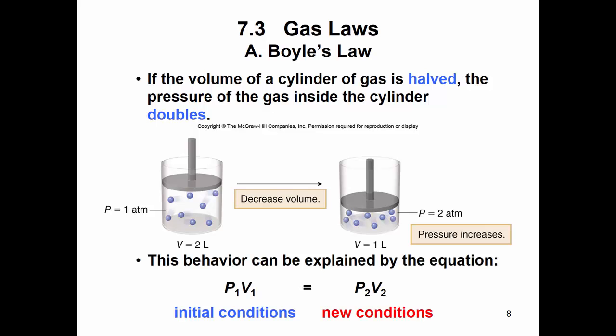And so we have an equation that explains this behavior and it is P1 V1 equals P2 V2. P1 and V1 are your initial conditions. One, you can think of that as I for initial, either way. P is for pressure, V is volume. And P2 and V2, the two stands for your final conditions or your new conditions.